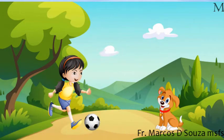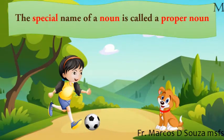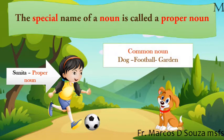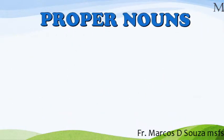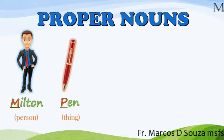A name can be common or special. The special name of a noun is called a proper noun. Sunita is a special name for a girl, so Sunita is a proper noun. Dog, football and garden are common nouns. Proper nouns always begin with a capital letter.